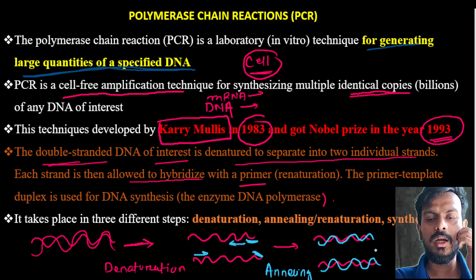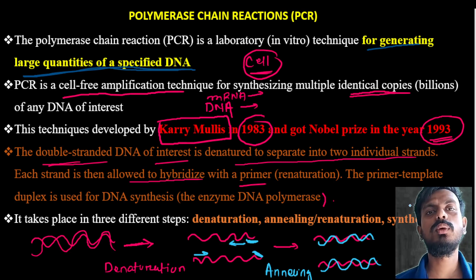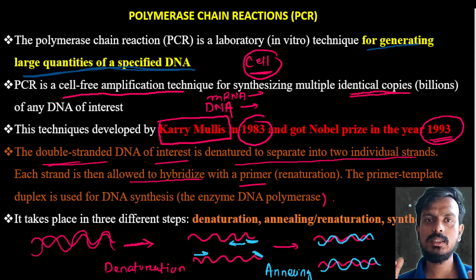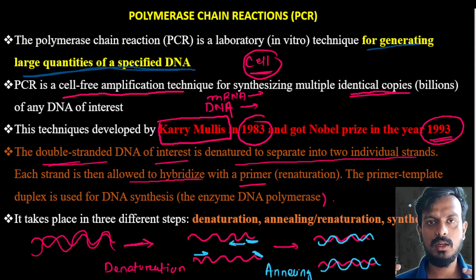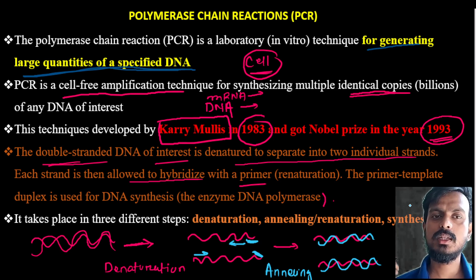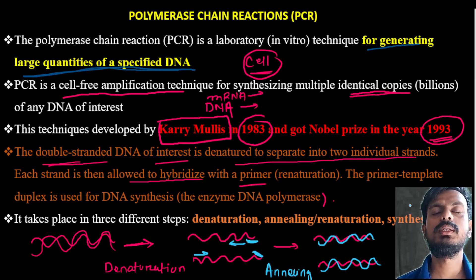From one DNA, two copies are formed. Similarly from two to four, four to sixteen — like that, synthesis of DNA strand takes place. The initial DNA strand is denatured; from the denatured strand, the primer will attach, then the primer will start to grow, synthesizing complementary nucleotide bases, leading to formation of a new DNA strand. This is the basic principle of PCR.